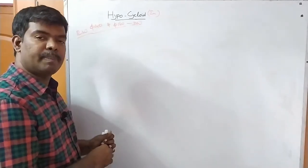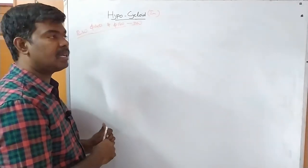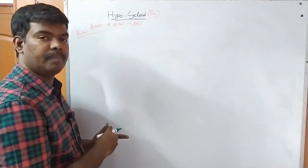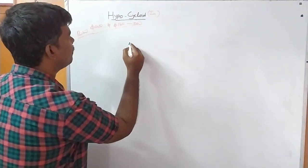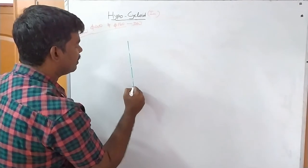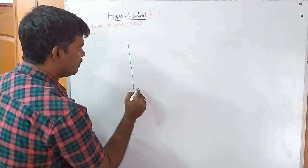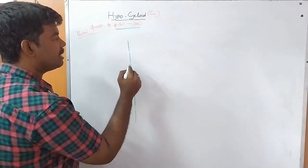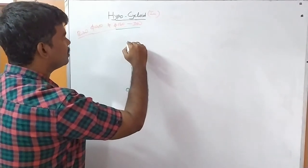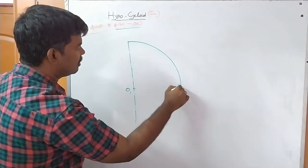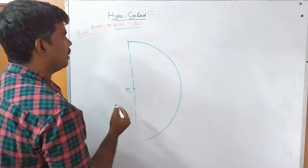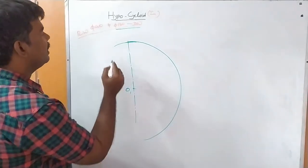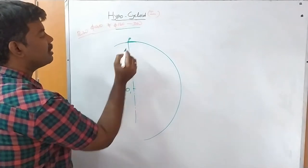This is similar to an epicycloid but with one difference: epicycloid means the rolling wheel rolls on the outside of another wheel, while hypocycloid means the rolling wheel rolls inside that other wheel. First, draw a center line and select center O1. The directing wheel size is 160, so take radius 80 and draw one arc.